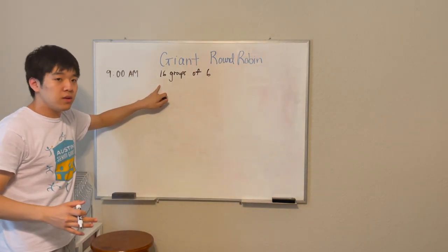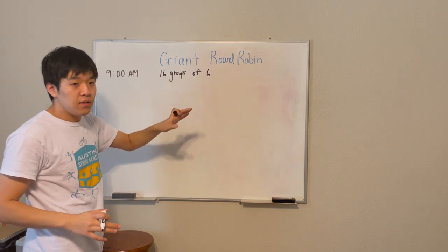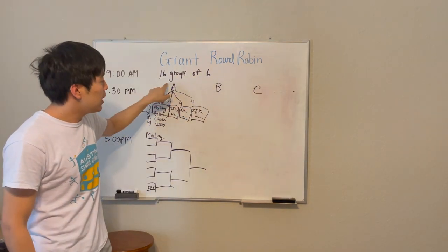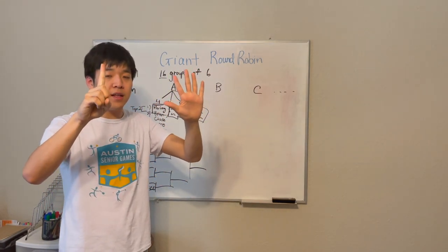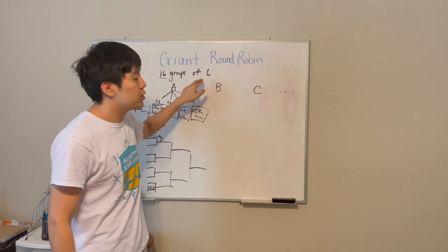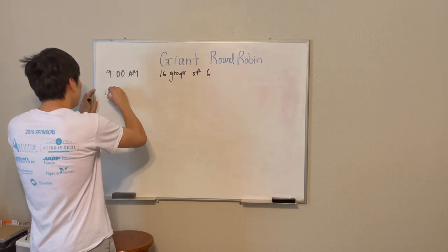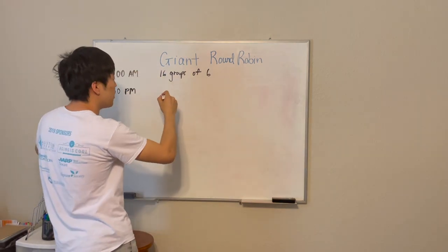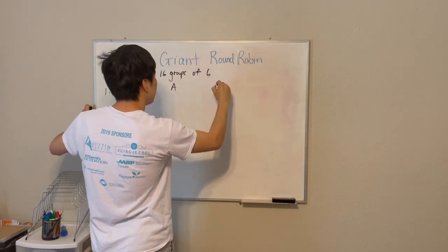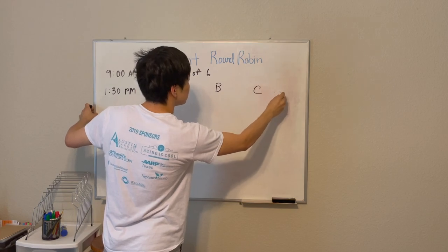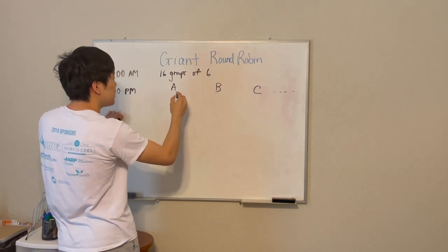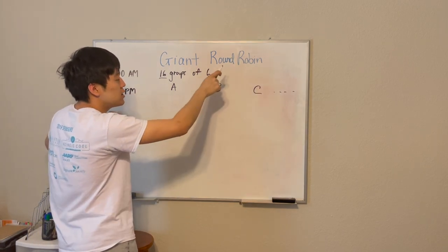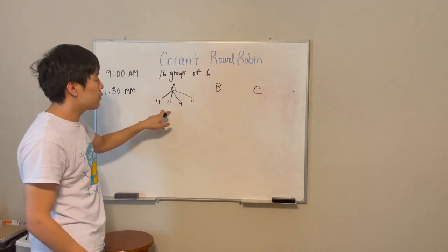Instead of going immediately to single elimination, all the A's that advanced out of the 16 groups in the morning at 9 a.m., all the A's are going to go into an A round robin, and then all the B advancers will go into a B round robin and so on. Because there's 16 groups of six, that means there will be A, B, C, D, E, F divisions - six divisions. In the A division there will be four groups of four to total 16, and same for all of these.